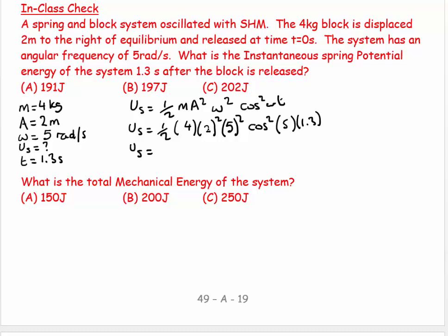So US = 200·cos²(5 × 1.3) = 200·cos²(6.5 radians) — making sure we're in radians. cos(6.5) ≈ 0.976, squaring gives 0.9537, and multiplying by 200 gives approximately 190.7, which rounds to 191 joules.